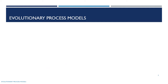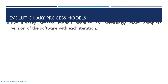What is the evolutionary process model? The evolutionary process model produces an increasingly more complete version of the software with each iteration. It is also called the incremental process model — in one iteration, one version of software is produced.